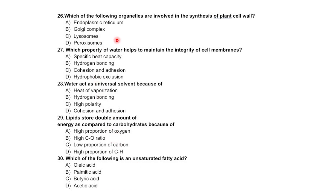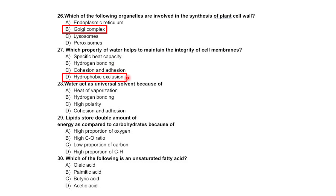Which of the following are involved in the synthesis of the plant cell wall — endoplasmic reticulum? Which property of water helps to maintain the integrity of the cell membrane: specific heat capacity, hydrogen bonding, cohesion, or hydrophobic exclusions — correct option is hydrogen bonding.